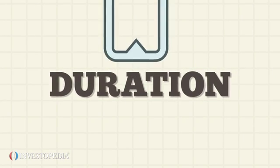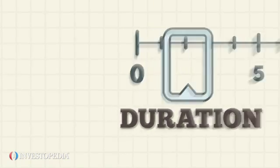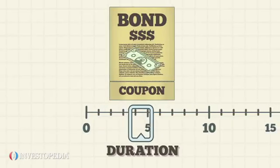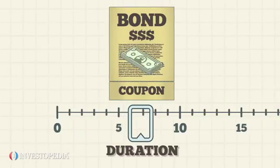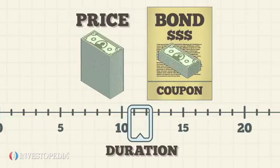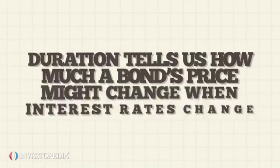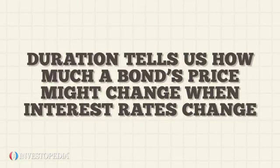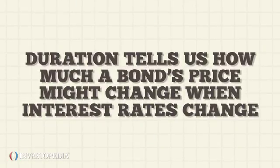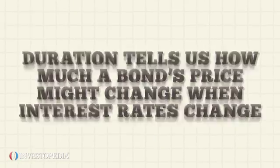Duration tells investors the length of time in years that it will take a bond's cash flows to repay the investor the price he or she paid for the bond. A bond's duration tells us how much a bond's price might change when interest rates change.